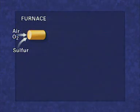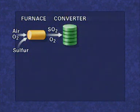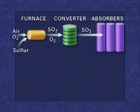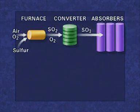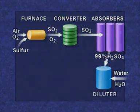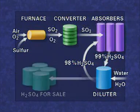Sulfuric acid is formed by burning sulphur in a furnace to form sulphur dioxide. In a converter, the sulphur dioxide reacts with more air to form sulphur trioxide. In absorbers, the sulphur trioxide mixes with fairly concentrated sulphuric acid to increase the concentration of the acid. The acid is then diluted to the concentration needed by the customer. Some acid is recycled through the absorbers, and some is stored for sale.